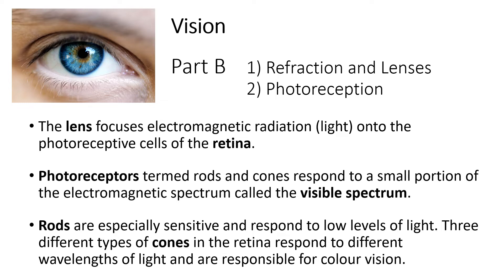The lens uses refraction to focus electromagnetic radiation onto the photoreceptive cells of the retina. Electromagnetic radiation comes in lots of forms — microwaves, radio waves, ultraviolet, infrared, and all sorts of stuff we can't see. The only portion we can see is a tiny slice of the electromagnetic spectrum that we refer to as visible light, because that's what our eyes have evolved to respond to.